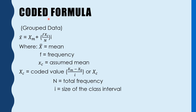So this is the coded formula. The assuming value is equal to the coded value, where XC stands for the class mark minus X — the assumed mean — over I. XM is the class mark, N is the total frequency, and I is the size of the class interval.